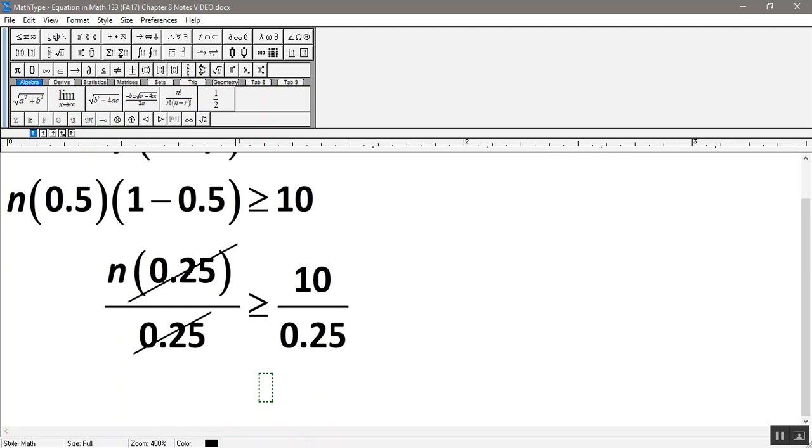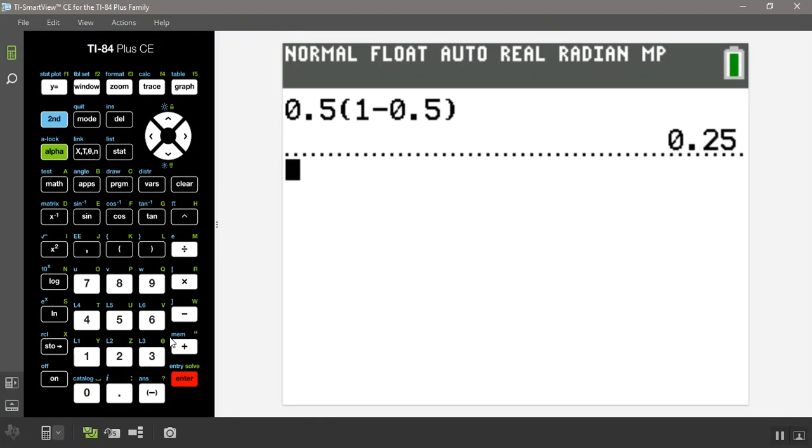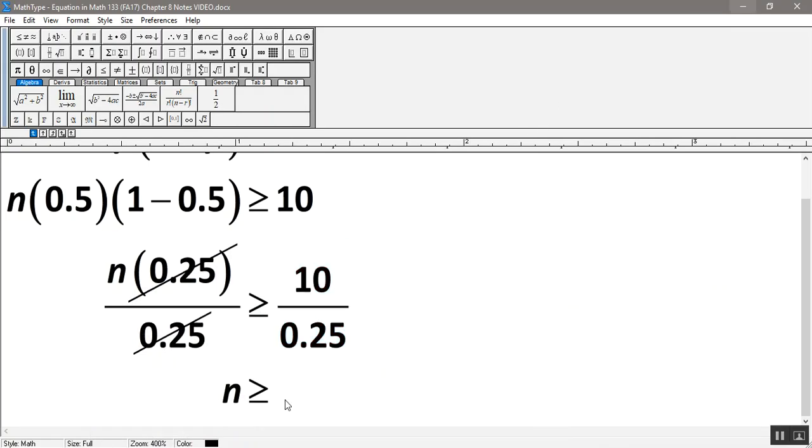So N is greater than or equal to whatever this number is, 10 divided by 0.25. So I'm going to take 10 divided by 0.25, and I get 40. So I would have needed to have 40 students in the room performing this test in order to ensure normal, according to the Central Limit Theorem.